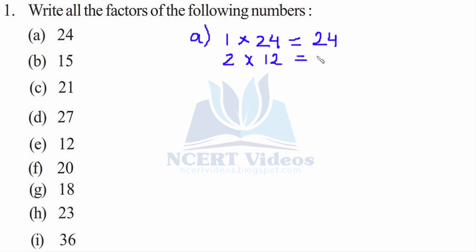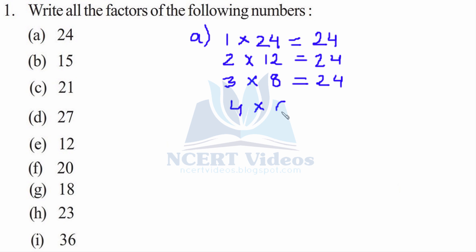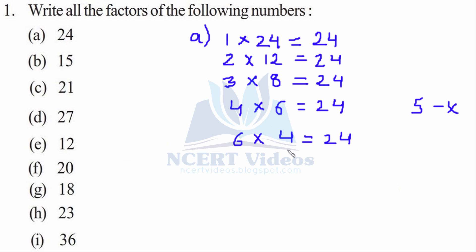Now 3 — yes, it is divisible, so 3 times 8 is 24. Then for 4: 4 times 6 is 24. 5 — no. 6 — yes, 6 times 4 is 24, so it is a factor. 7 is not a factor.